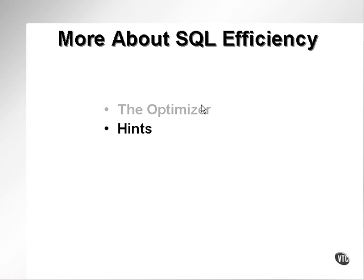The operative term is 'suggest.' The hint attempts to suggest a change to an execution plan to the optimizer. The optimizer doesn't necessarily listen to it.